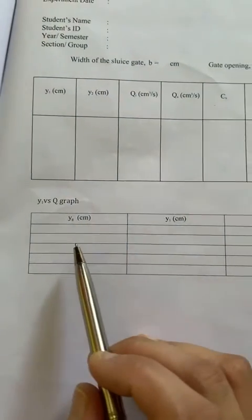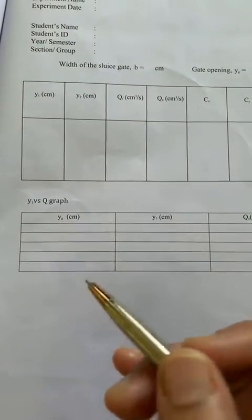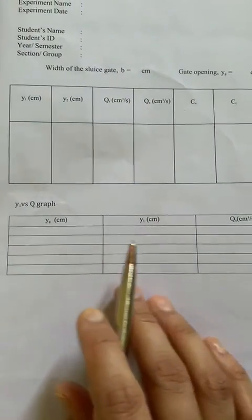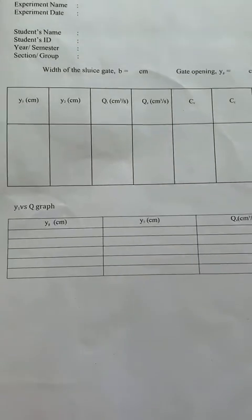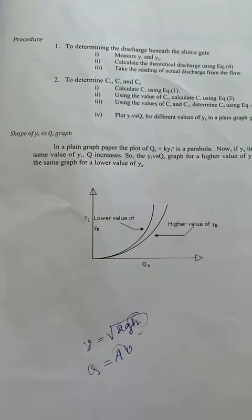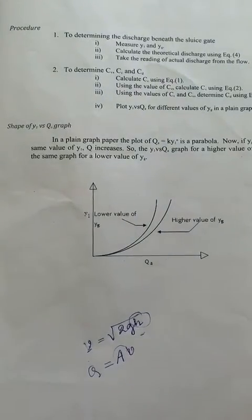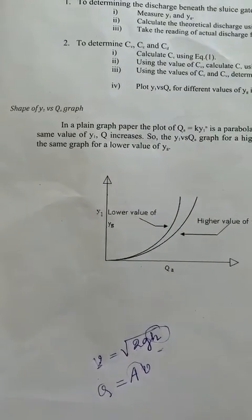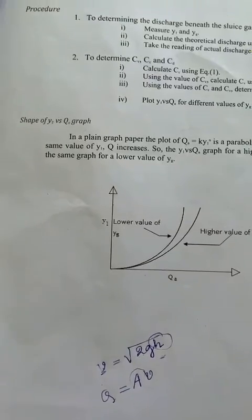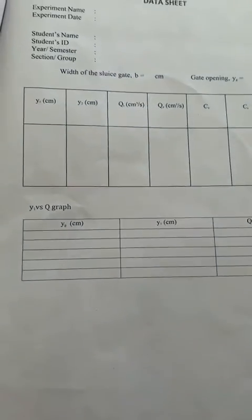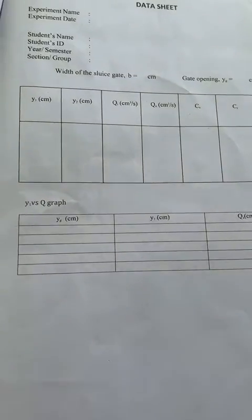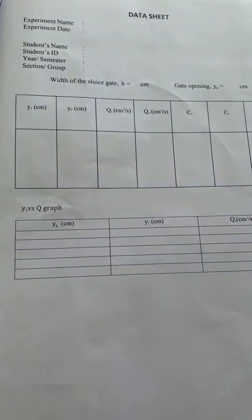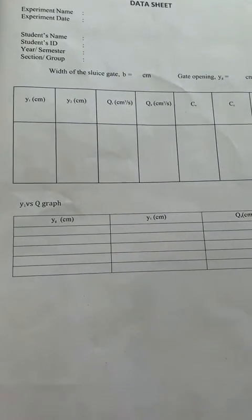With the help of those readings, we have to plot the graph. In this way, we have to find out both the actual discharge and theoretical discharge, and after that the coefficient of discharge. So this is the result part of flow through a sluice gate.